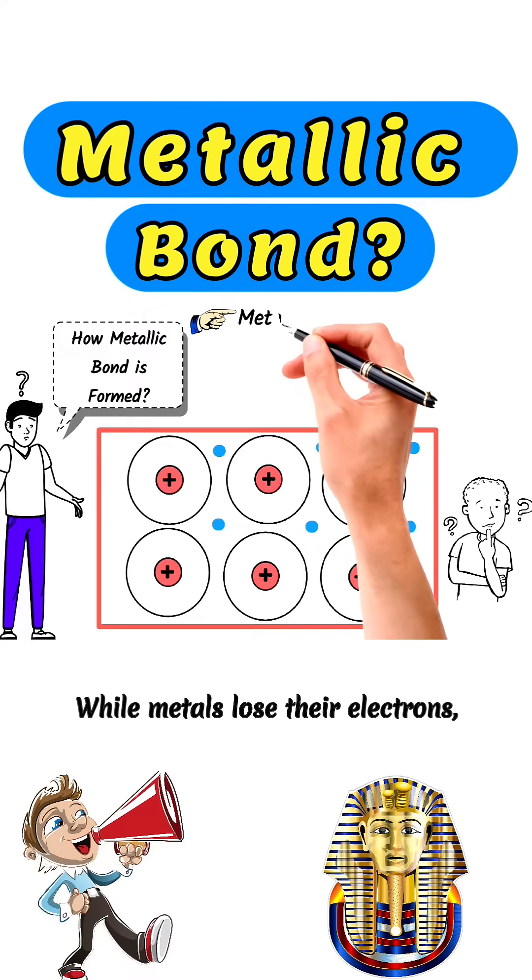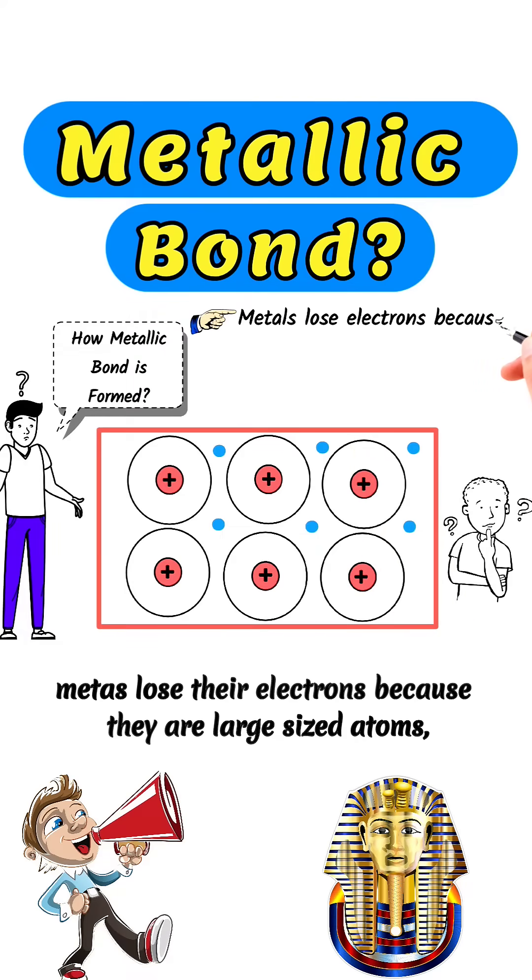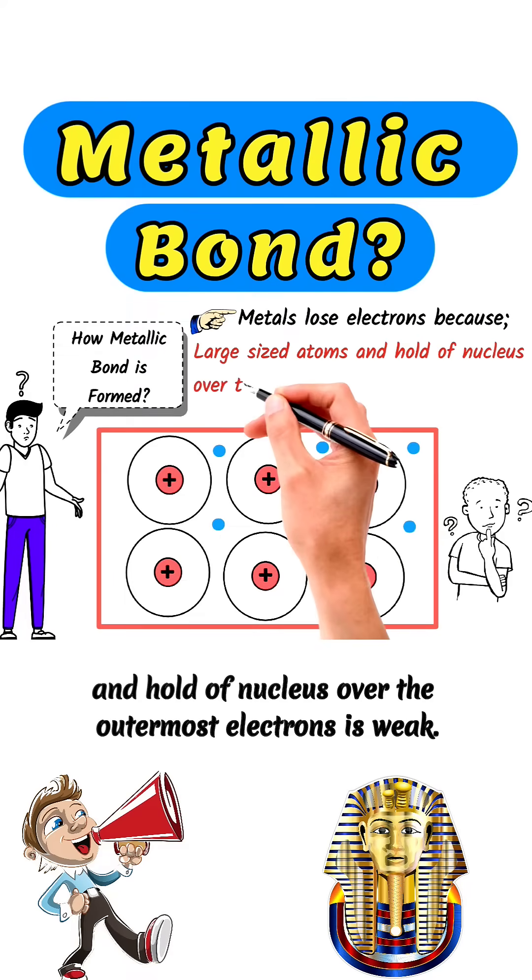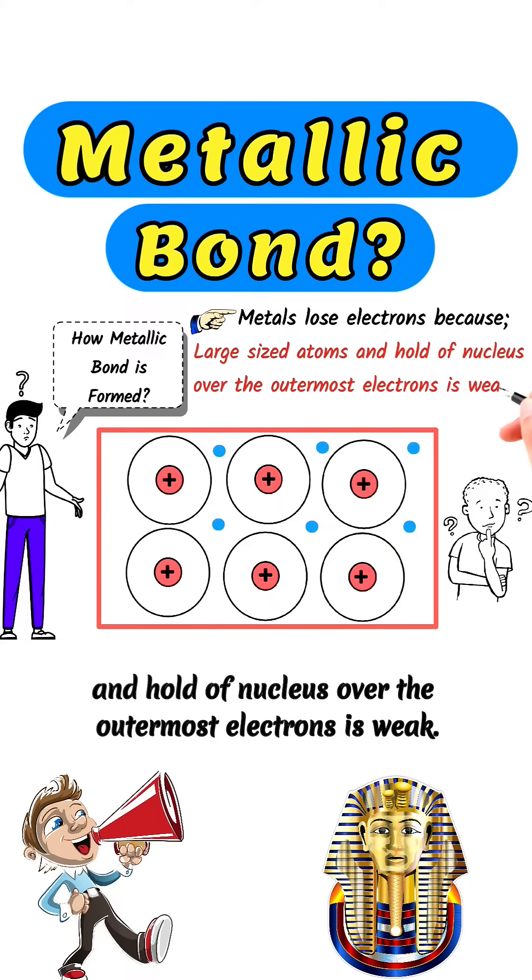Why do metals lose their electrons? Metals lose their electrons because they are large-sized atoms and the hold of the nucleus over the outermost electrons is weak.